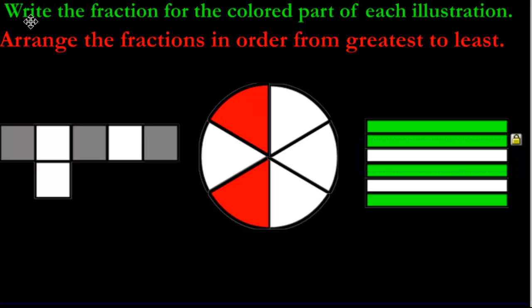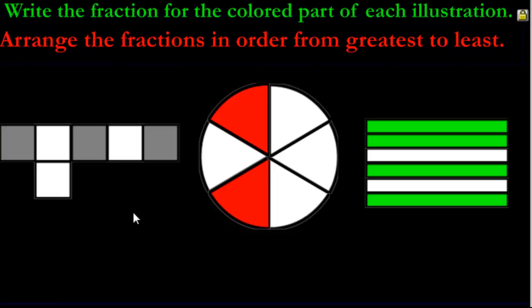Now it's your turn. We have two questions coming up. Write the fraction for the colored part of each illustration, then arrange them in order from greatest to least — greatest first and least last. Go ahead, pause the video and write everything down so you can check your answers. All right, time's up. Let's see how well you did.